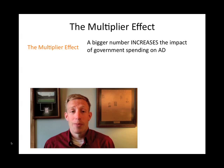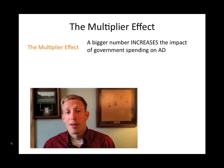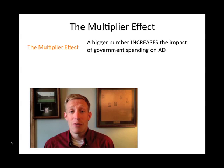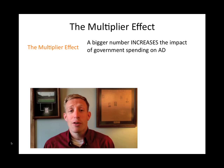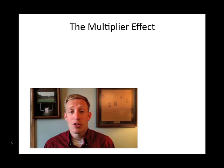Let's say we have a situation where government is going to spend a certain amount of money. They want to know how much of that money is going to trickle down into the consumer's pocket that they're going to spend, thereby increasing aggregate demand even further. So they calculate this multiplier effect. The multiplier effect is equal to a fraction of 1 divided by 1 minus the marginal propensity to consume.